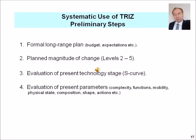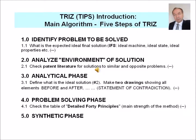Before starting to work with the core invention algorithm, there are some preliminary steps to be taken: a formal long-range plan, the plan of magnitude of change, evaluation of the present technology stage, and evaluation of present parameters. The core of the invention algorithm is a procedure based on five steps: identification of the problem to be solved; analysis of the environment of solutions; the analytical phase with pattern literature; the problem-solving phase based on the 40 core principles; and the synthetic phase, where everything is put together.